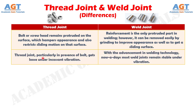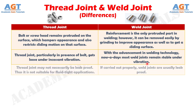Number 6: thread joint, particularly in the presence of a bolt, gets loose under incessant vibration. Whereas, with the advancement in welding technology, nowadays most weld joints remain stable under vibration.